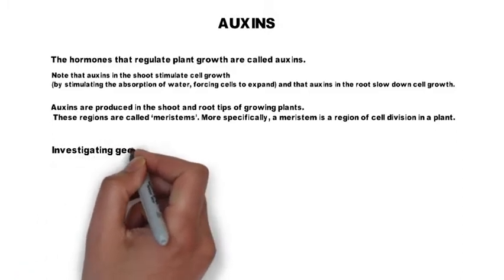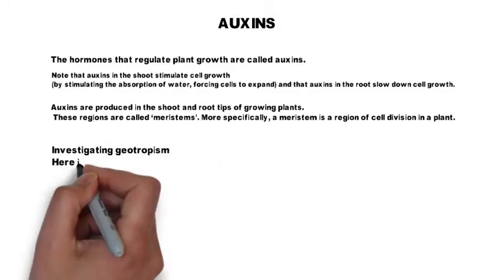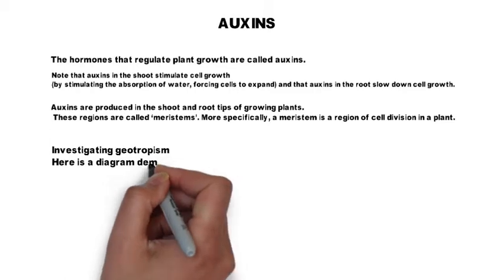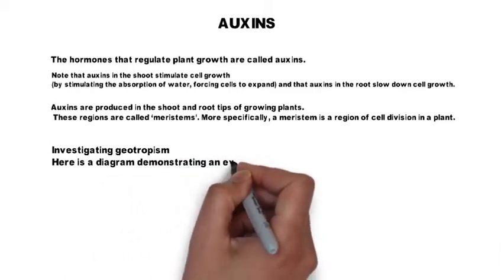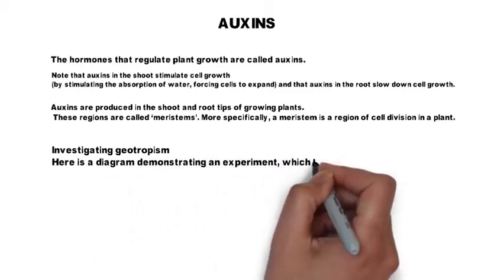Investigating geotropism. Here is a diagram. If a plant is laid on its side, auxin gathers in the lower half of the stem and root.